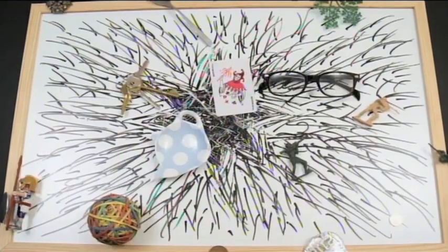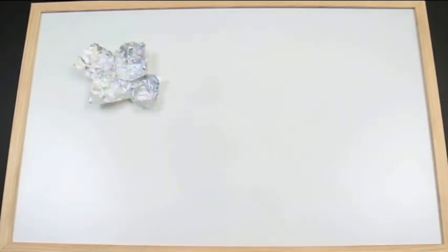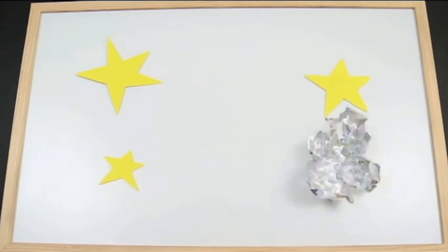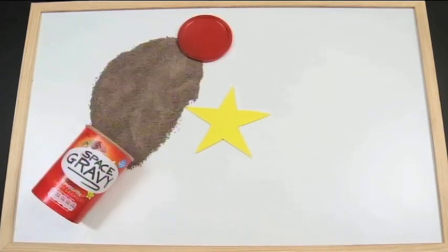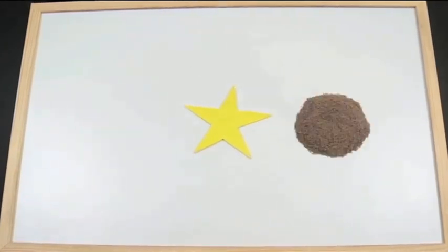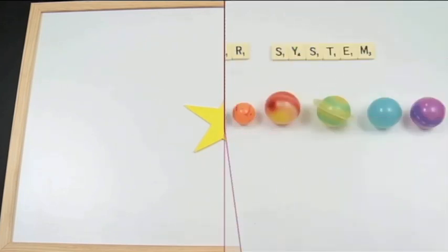13.7 billion years ago, the Big Bang created the universe. Stars came and went. Until 4.5 billion years ago, the sun was born. Its gravity kick-started the creation of the solar system out of nothing but stardust.